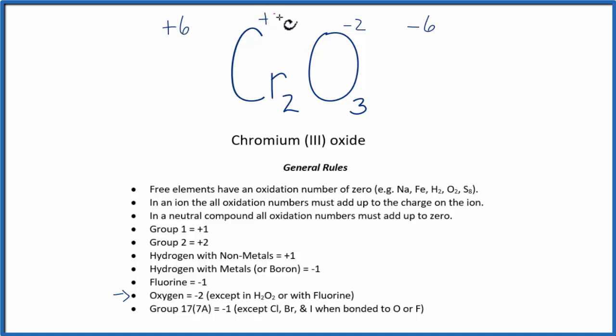2 times plus 3, that's plus 6. That means the oxidation number for each chromium is plus 3.